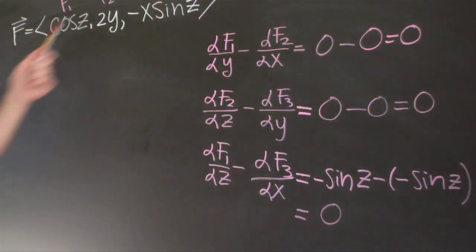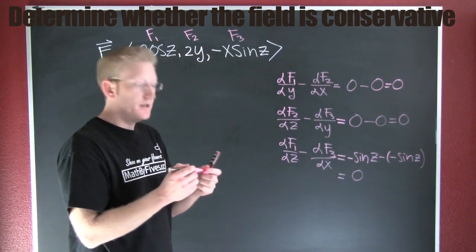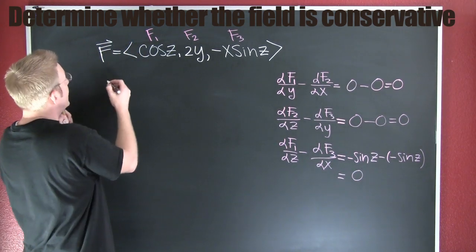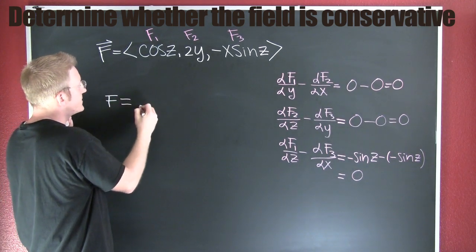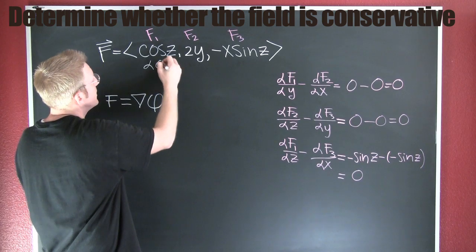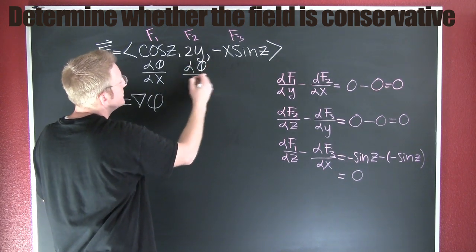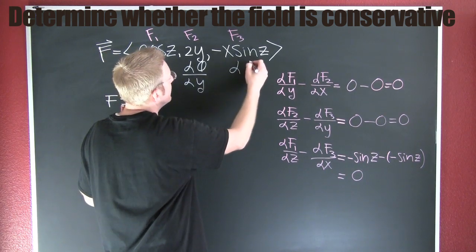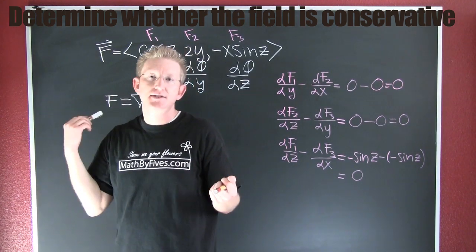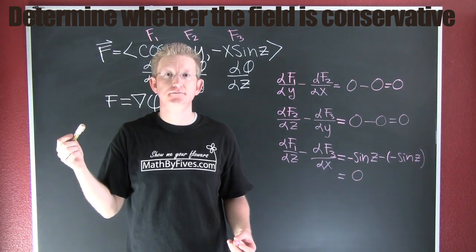So now all our mixed partials are the same — I can tell you that this vector field is indeed conservative. Being conservative also gives us that this is a gradient field: f is the gradient of some potential function. That means f1 is the partial of the potential with respect to x, f2 is the partial with respect to y, and f3 is the partial with respect to z. Now that we've shown it's a gradient field, we can go ahead and find the potential function.